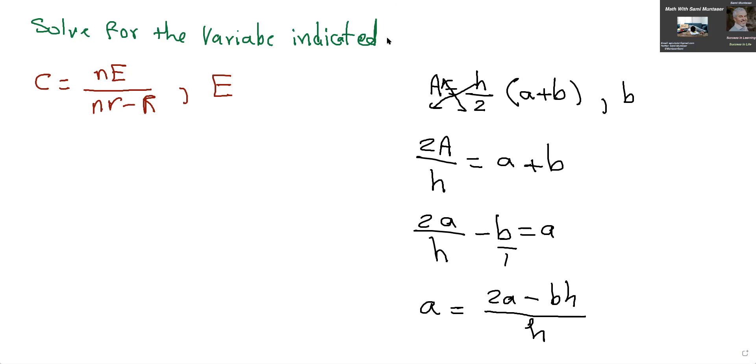Now, let's go to the other one right here. They want you to solve for E. So cross multiplying, I'm going to cross multiply all of this into where the C is. So I have C times (NR minus R) equals NE. Divide both sides by N, and that will cancel. And therefore, E equals C(NR minus R) over N.